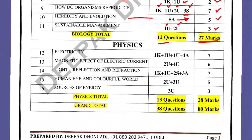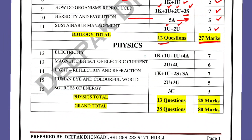Now coming to physics. For Electricity: one knowledge-based question, one understanding question, another understanding question, and four mark application-based — the application-based questions are numerical problems from this chapter — total seven marks. Magnetic Effect of Electric Current: two understanding-based questions and one four mark understanding-based question — total six marks.